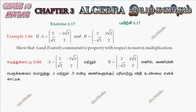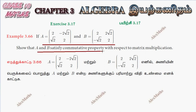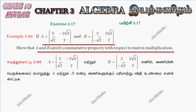Hi students, this is Alex here. Example 3.66. Given matrix A and B, the question is to show that A and B satisfy the commutative property with respect to matrix multiplication.